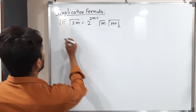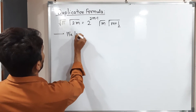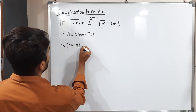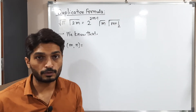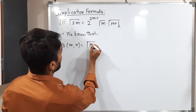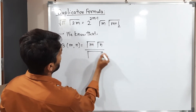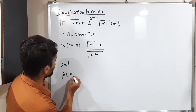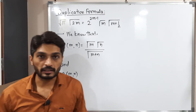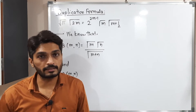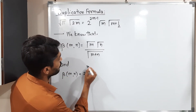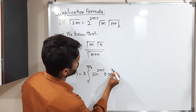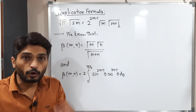I hope all of you are familiar with this property. We know that beta of m, n — from the relation between beta and gamma functions seen in previous videos — equals gamma(m) times gamma(n) divided by gamma(m+n). One more definition of beta function: beta(m,n) can also be expressed as 2 times the integral from 0 to π/2 of sin^(2m−1)(θ) cos^(2n−1)(θ) dθ.